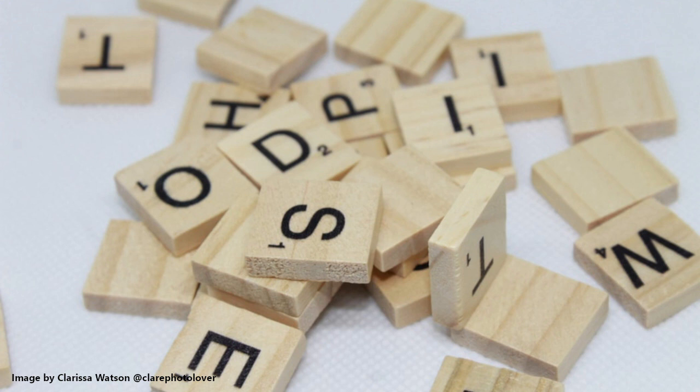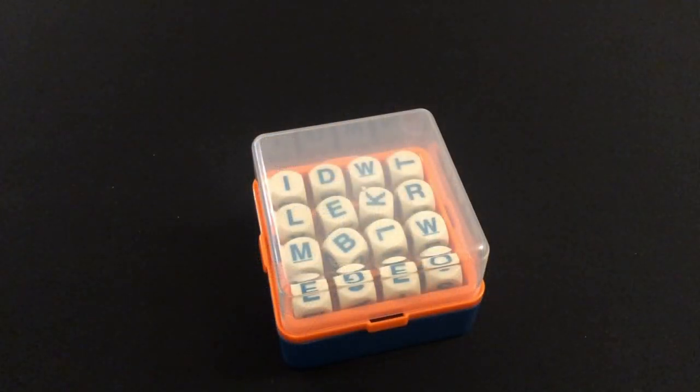Boggle makes it a little bit easier to play with younger children because short words are just as important as longer words. Everybody's playing at the same time, and then at the end of the timer you compare your list of words. If somebody else has got the same word as you, you can't score points for that word, you have to cross it out.